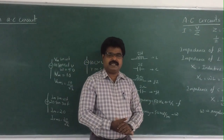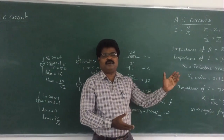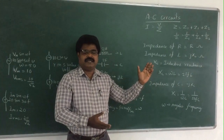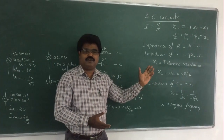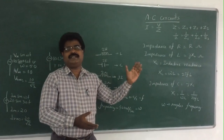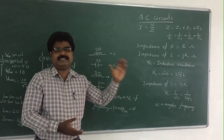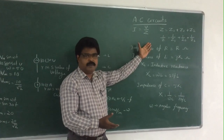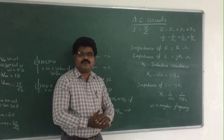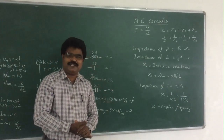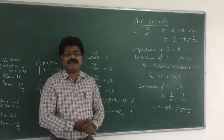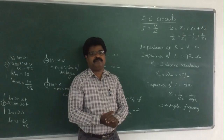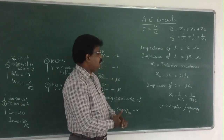When impedances are in series, Z is equal to Z1 plus Z2 plus Z3. Similarly, when impedances are in parallel, 1 by Z is equal to 1 by Z1 plus 1 by Z2 plus 1 by Z3.